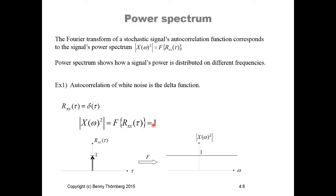This has some interesting implications for analyzing white noise. Because if the Fourier transform of the white noise power spectrum is equal to 1 — a constant — that means white noise contains an equal amount of power at all possible frequencies. This is illustrated in this graph, where we have the autocorrelation function of white noise as this delta spike. We apply the Fourier transform on this delta spike and get a constant of 1 on the power spectrum, meaning all frequencies have equal power.